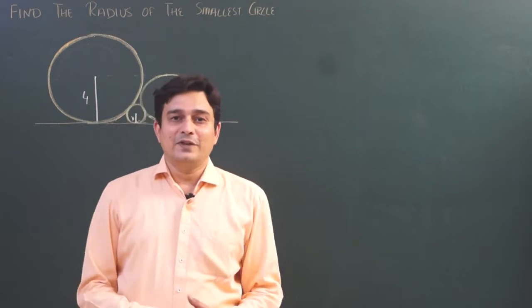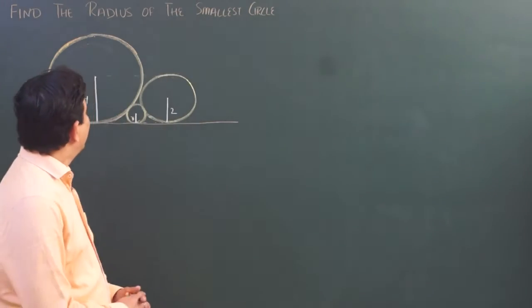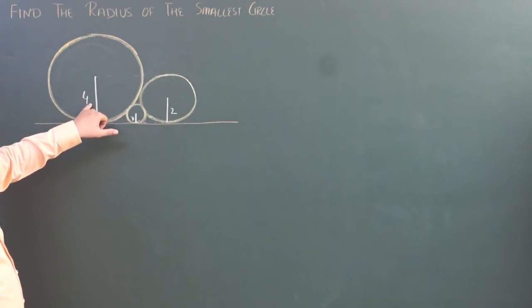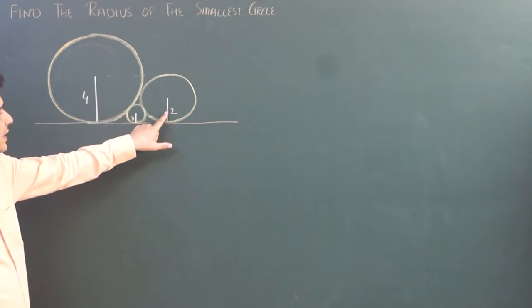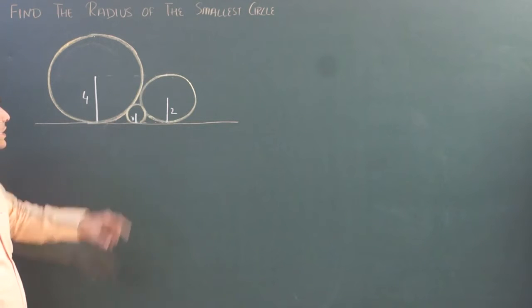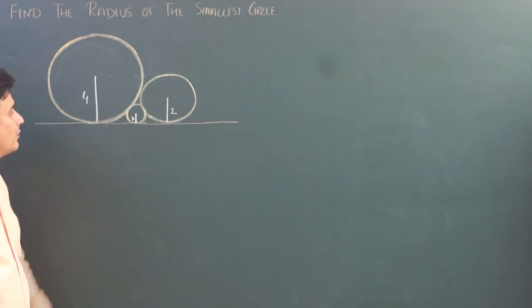Hello friends, back again with yet another puzzle. In this puzzle you are given 3 circles. The radius of the biggest circle is 4, intermediate is 2, and the smallest circle is R. This R you have to find.